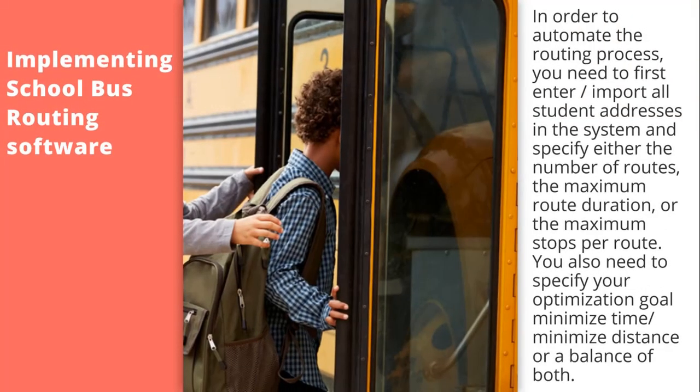Step 4: Implementing school bus routing software. In order to automate the routing process, you need to first enter or import the route. You need to import all student addresses into the system and specify either the number of routes, the maximum route duration, or the maximum stops per route. You also need to specify your optimisation goal — minimise time, minimise distance, or a balance of both. Once done, the system creates the most efficient route for your school buses, which will help you save on time, fuel cost and overhead.